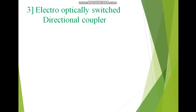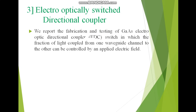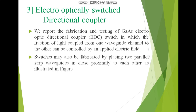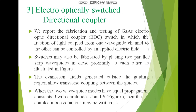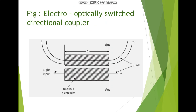Next, I will discuss the electro-optically switched directional coupler. We have studied the directional coupler topic in detail. The switches may also be fabricated by placing two parallel strip waveguides in close proximity to each other. A gallium arsenide electro-optically coupled coupler switch is reported, in which the fraction of light coupled from one waveguide channel to the other can be controlled by an applied electric field. The evanescent fields generated outside the guiding region allow transverse coupling between the guides. This is the diagram of the electro-optically switched directional coupler.